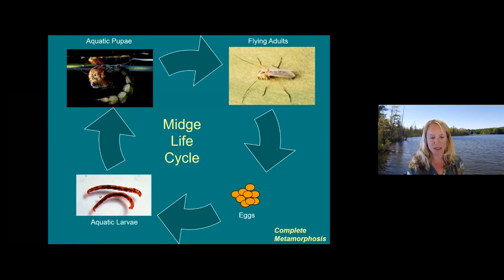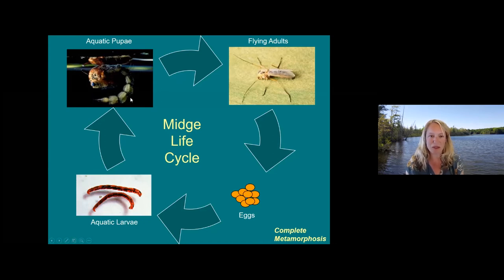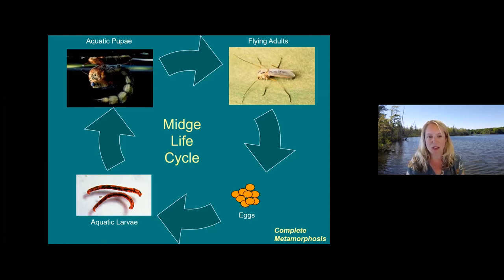Bloodworms are bright red because they have a compound like the hemoglobin in our blood that helps them circulate oxygen even in oxygen-poor environments. Many midges don't exhibit this red color. These larvae then evolve into a pupa stage that you may see floating in some of your samples. They float on the water surface until it's time to emerge, and when they emerge, you get another generation of flying adults.